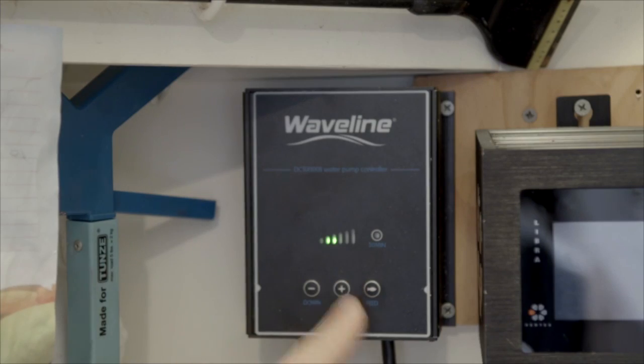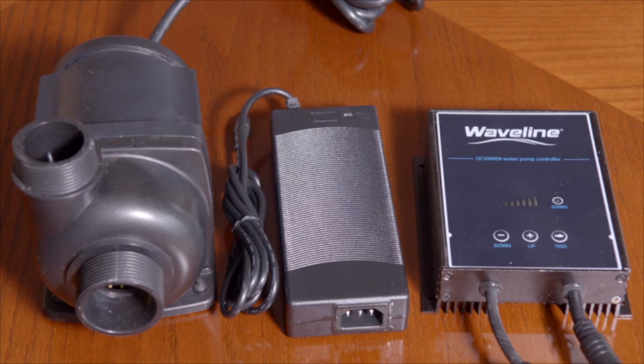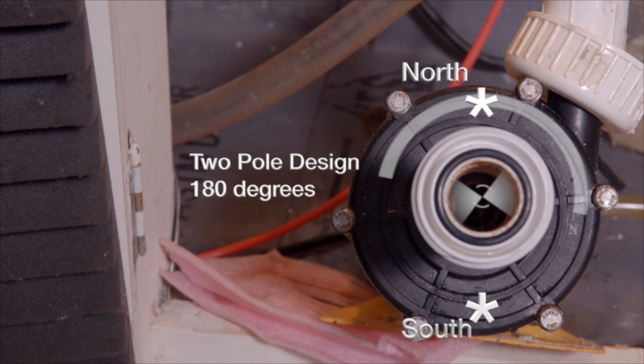Also, this pump is using second-generation electronics, which means that they made improvements from the first generation. What makes the Waveline series so quiet? AC pumps have two poles, north and south.